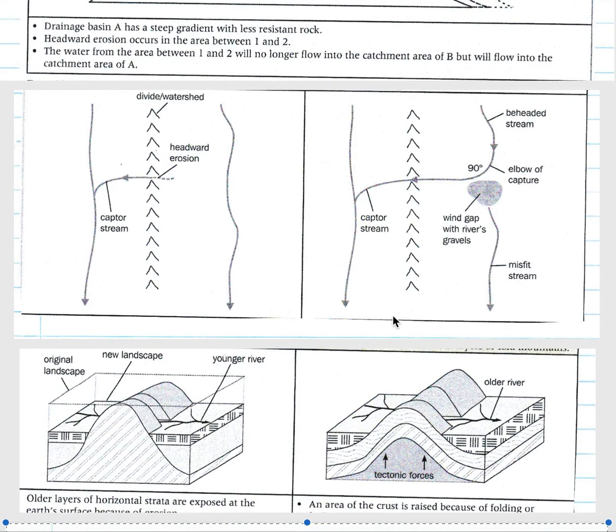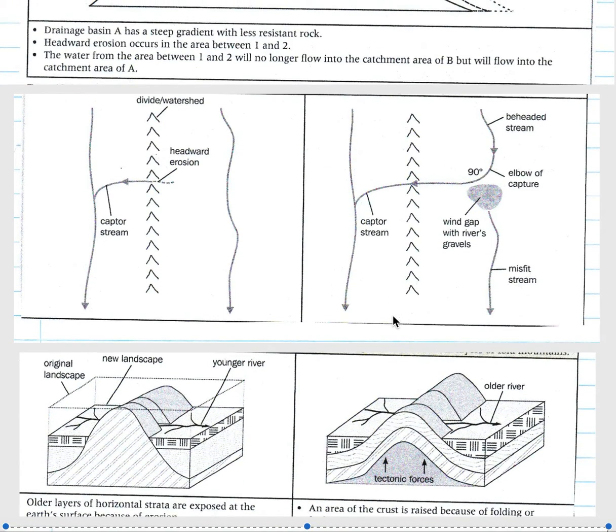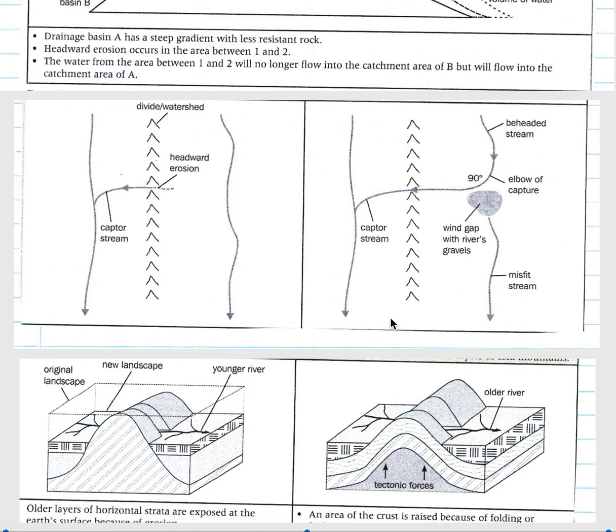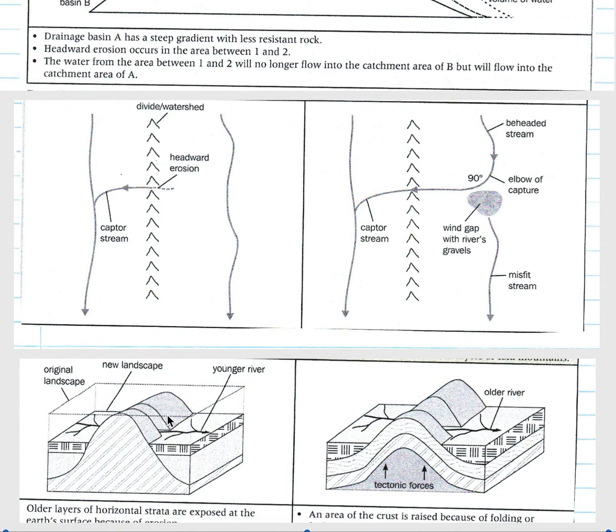Then lastly, we have a look at the superimposed antecedent drainage. When we look at superimposed drainage, this is where you have a river that has cut into the original landscape. By erosion, your older layers of horizontal strata are exposed at the earth's surface and your river then cuts down into the older landscape that has been exposed where your younger river is now flowing through your original older landscape.